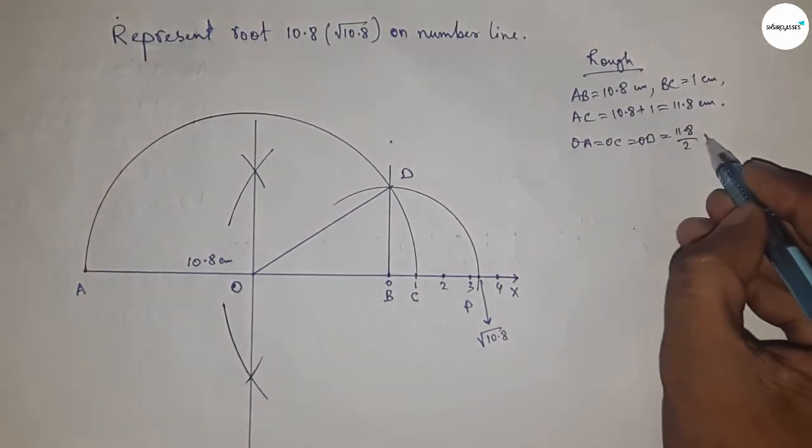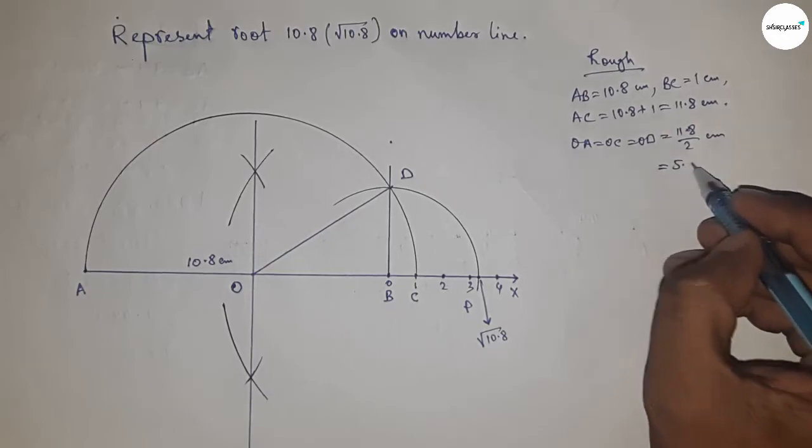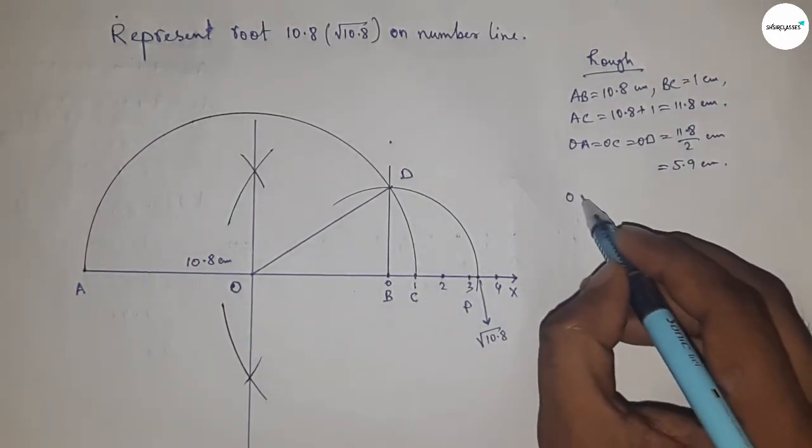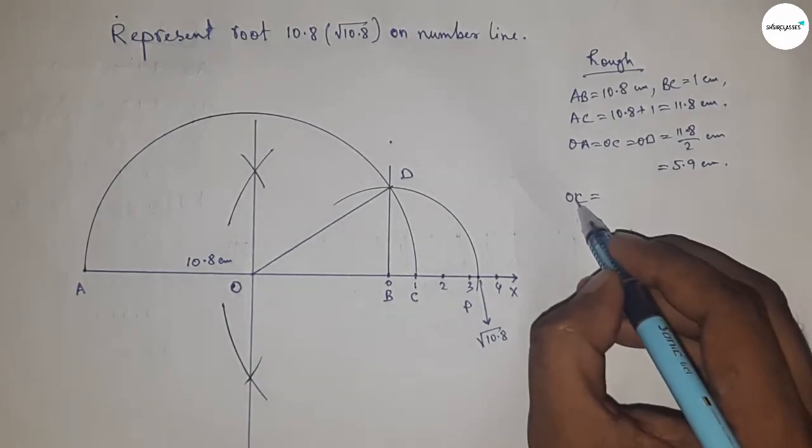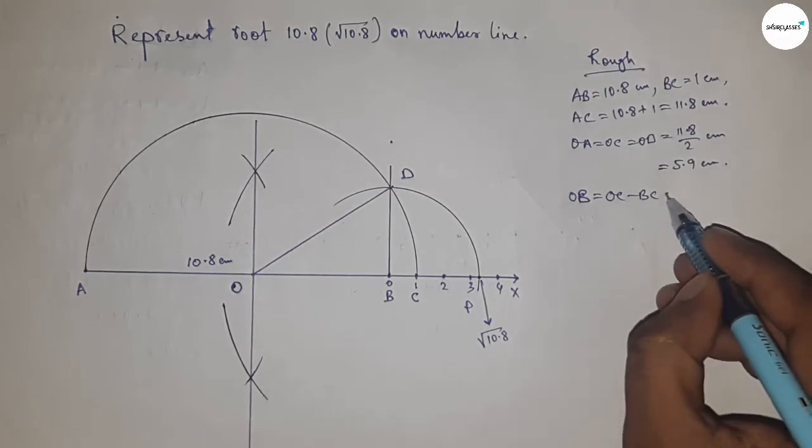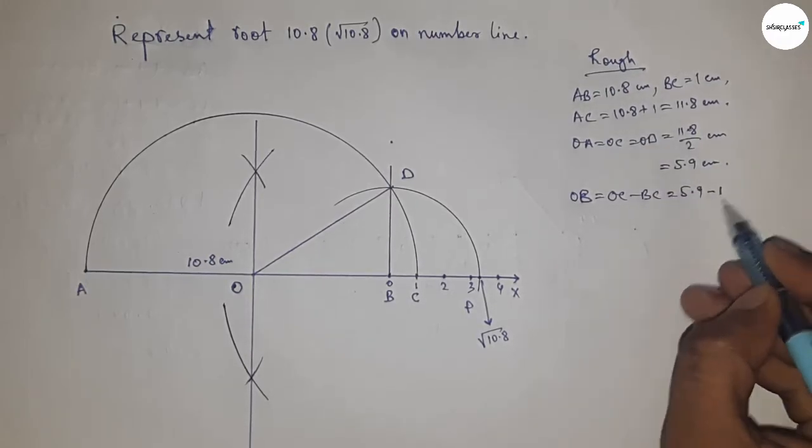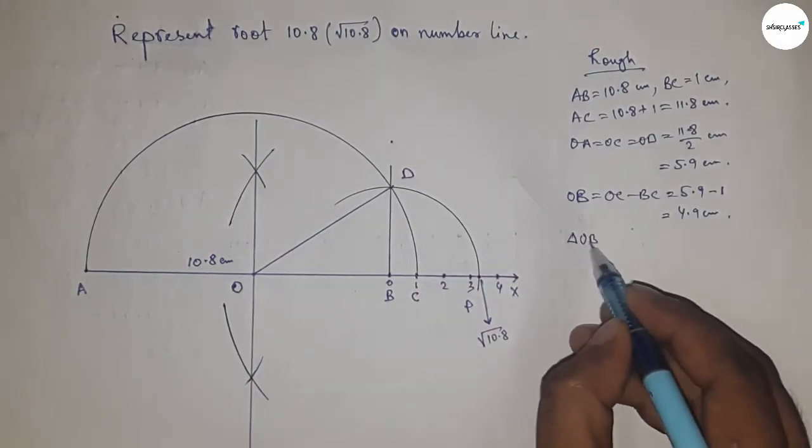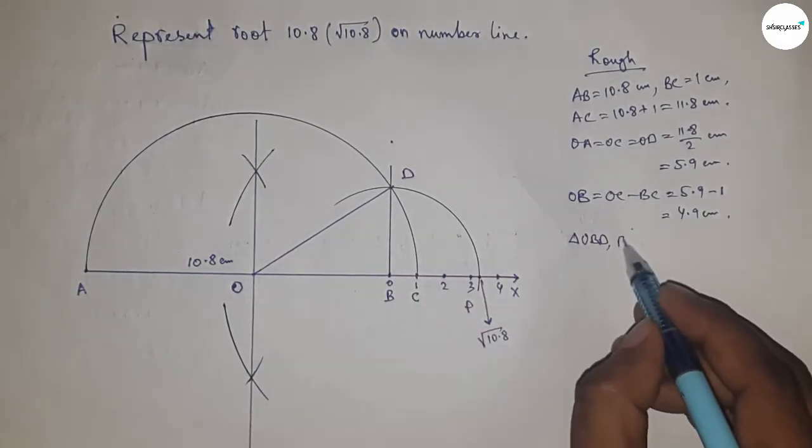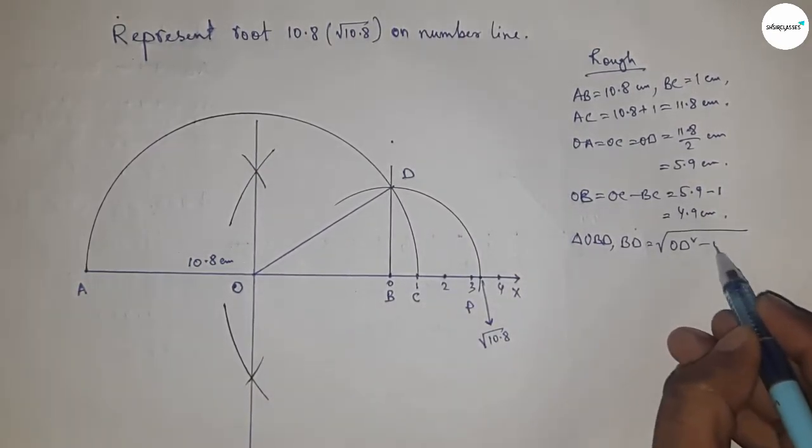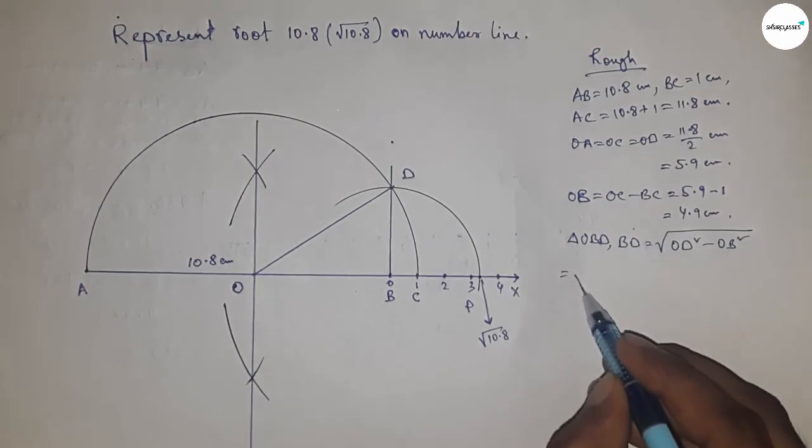Now distance OB equal to OC minus BC, so putting the value of OC and BC, so this is 4.9 centimeter. Now from right angle triangle OBD, we can write BD equal to by Pythagoras theorem OD square minus OB square, that's mean hypotenuse square minus base square.